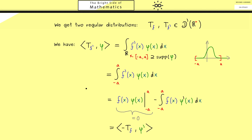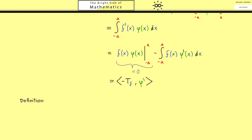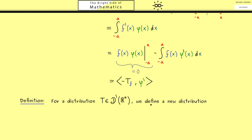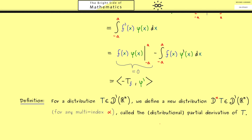This motivates the general definition we have for distributions: the distributional derivative. Our starting point is any distribution T in D', and we formulate the definition for any dimension n. We define a new distribution which is the derivative of T. Since there are already many primes involved and for partial derivatives we use a different notation, we write D^alpha T, where alpha is a multi-index. This should be a well-defined new distribution — the partial derivative of T — and when there is potential confusion with the classical derivative, we call it the distributional partial derivative.